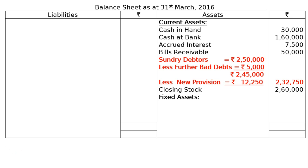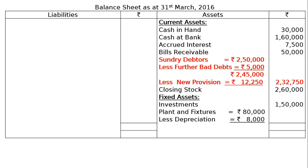Under fixed assets: investments Rs. 1,50,000; plant and fixtures Rs. 80,000, less depreciation of 10% that is Rs. 8,000, giving a net figure of Rs. 72,000 in the final column. The total of the asset side is Rs. 9,62,250.